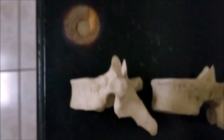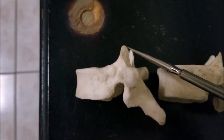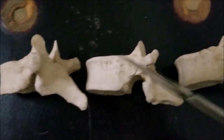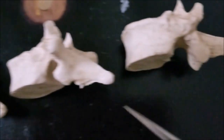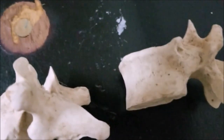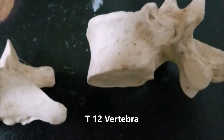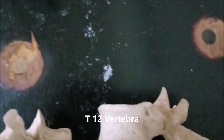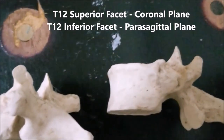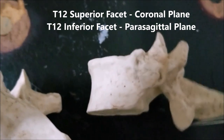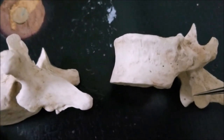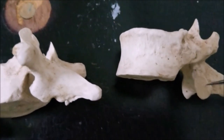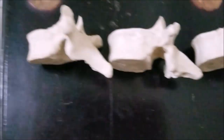Coming lower down, we see the same thing: the thoracic vertebrae superior and inferior articular facets are all in a coronal plane. Finally, let's come to the 12th thoracic vertebra, where we shall see something very unique. The superior articular facet of T12 is in a coronal plane, while the inferior articular facet is located in a parasagittal plane — because this inferior facet has to articulate with L1.